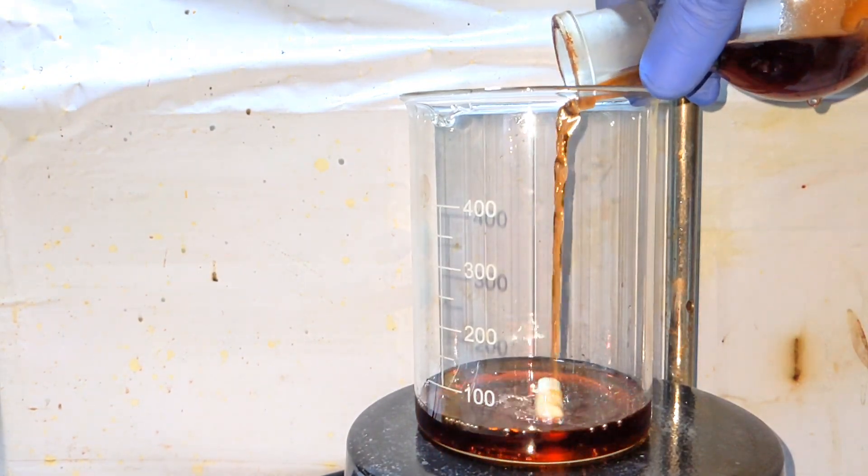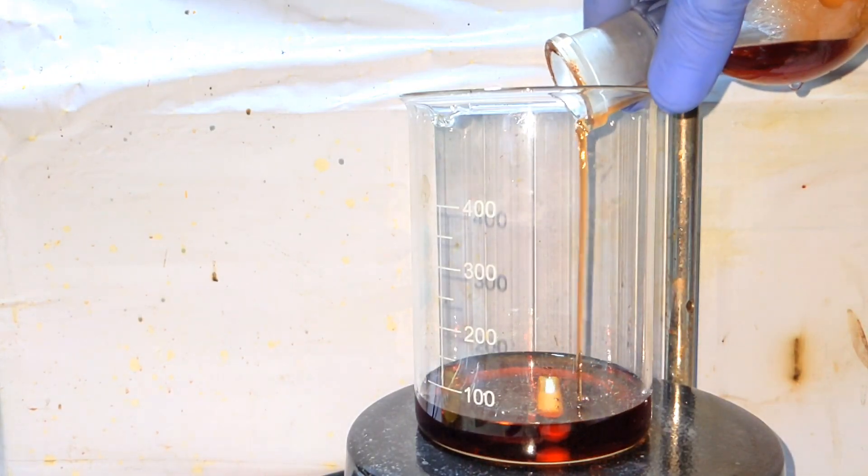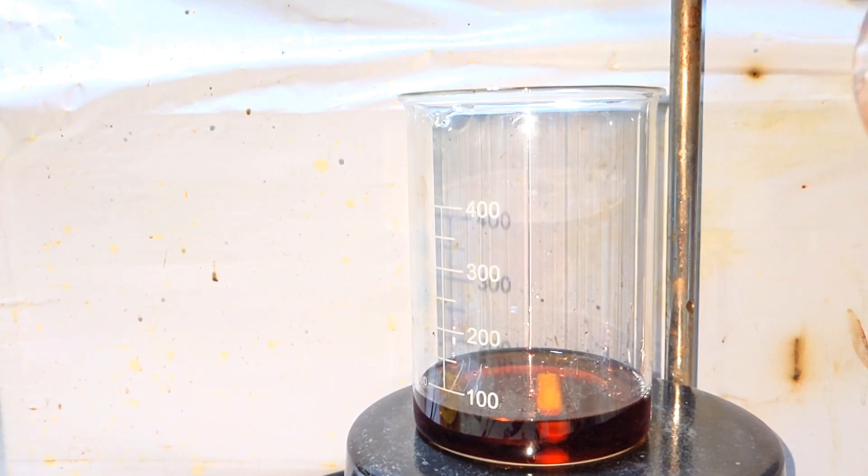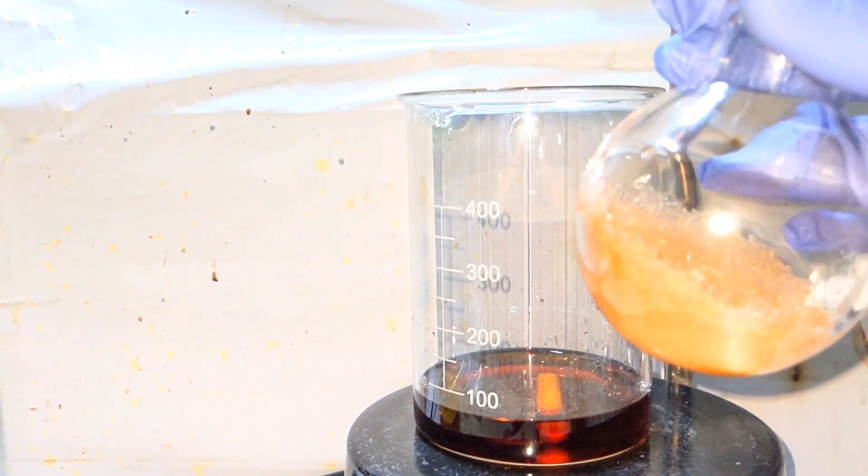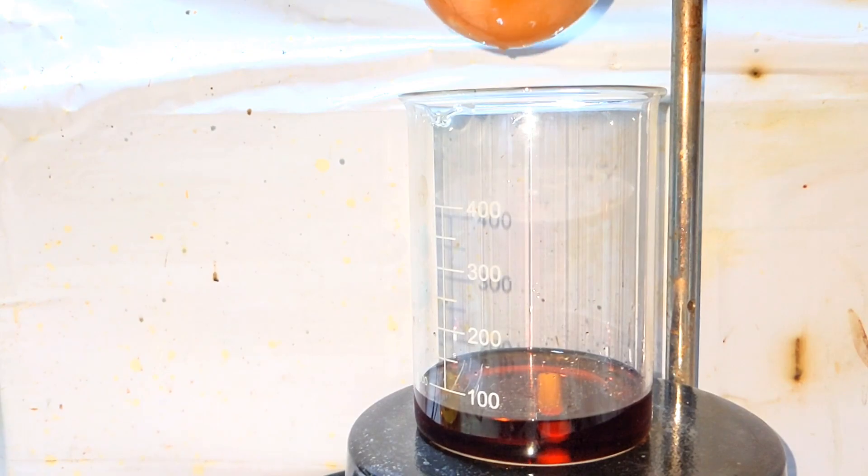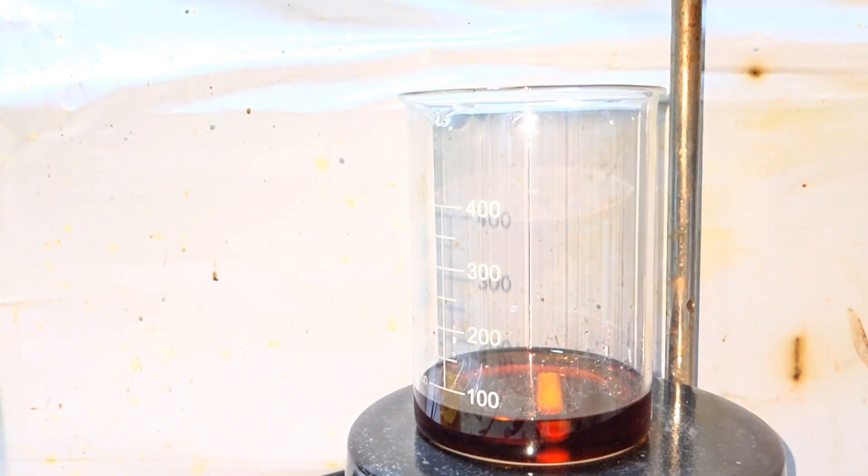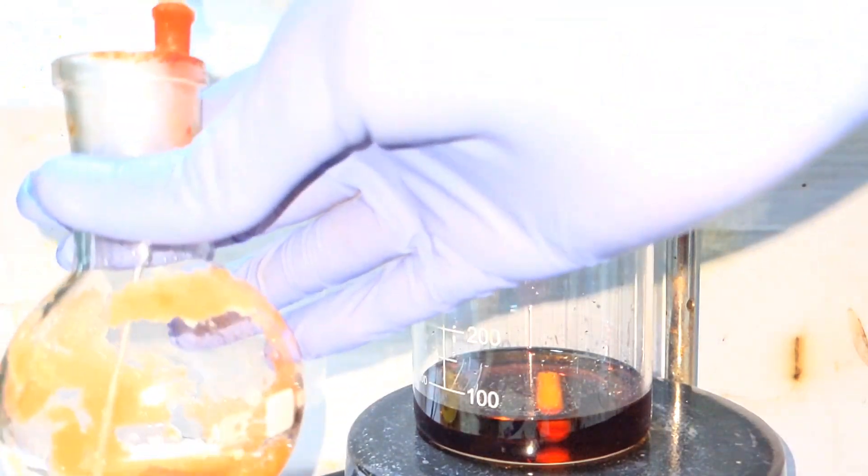After 15 minutes the flask was let to cool down to room temperature and the contents were transferred to a large 500 milliliter beaker. You can clearly see some crystals have already formed in the flask. Those crystals were washed down to the same beaker with some cold distilled water.